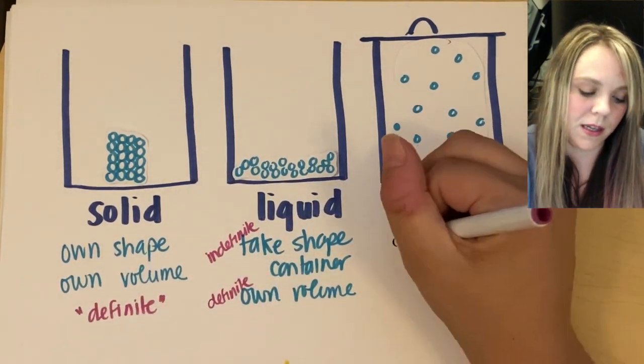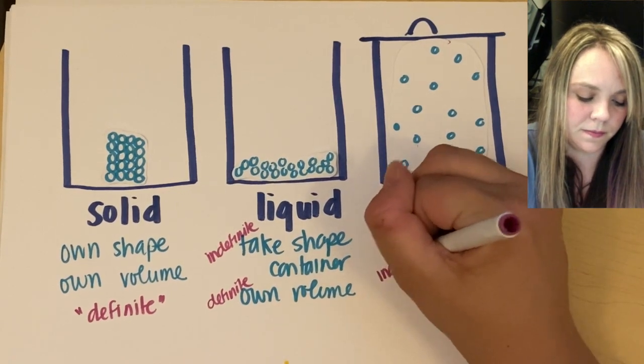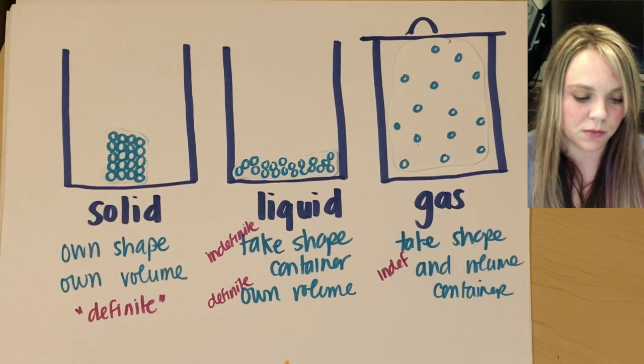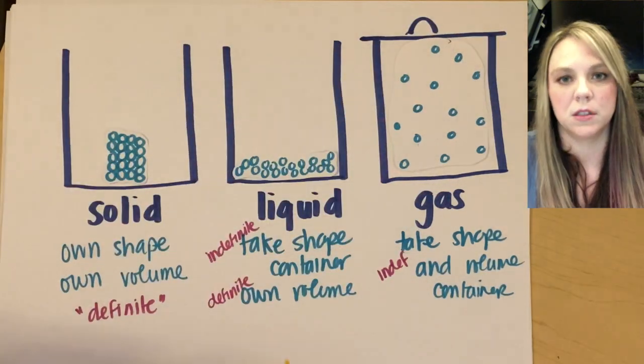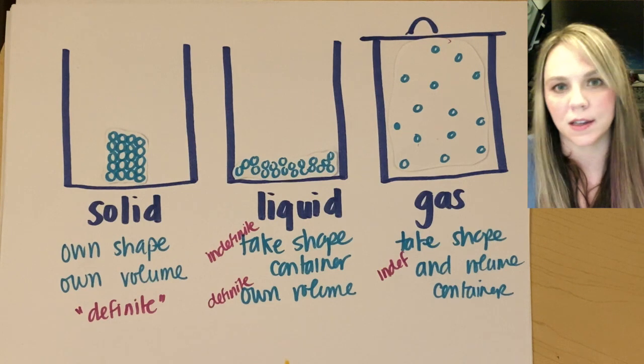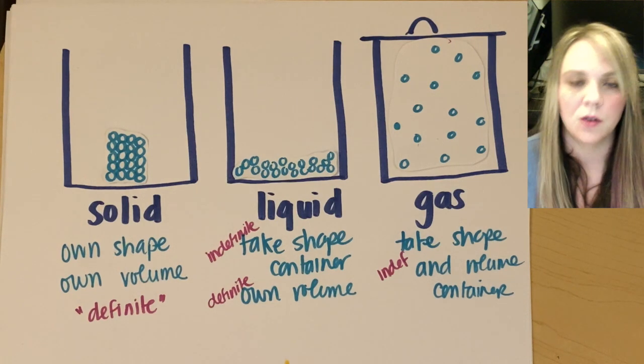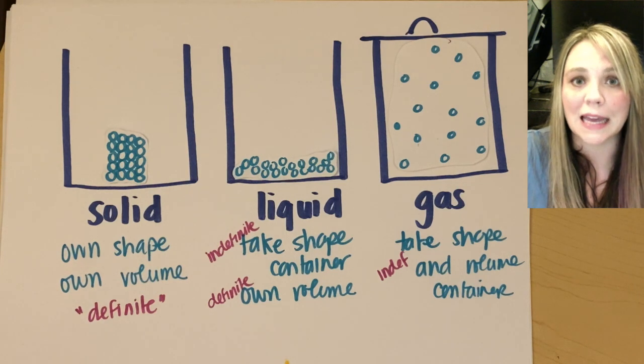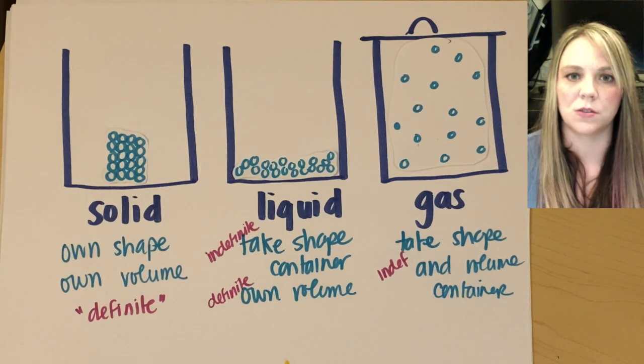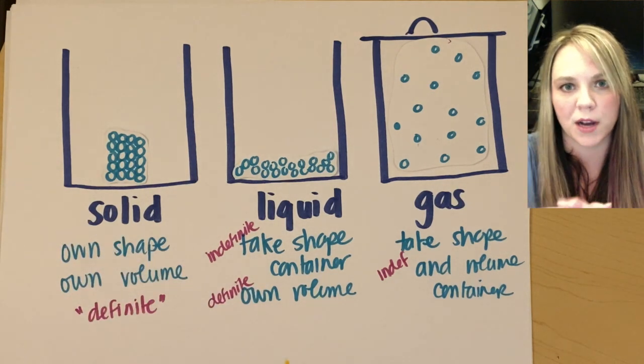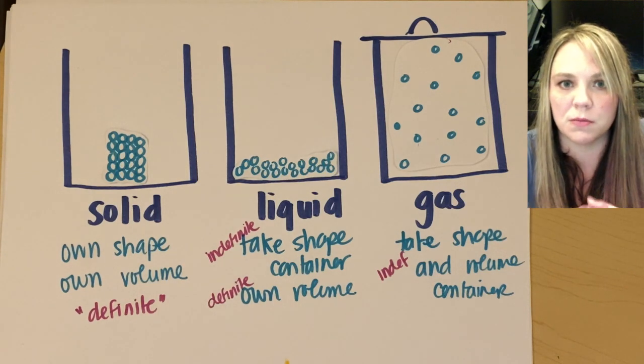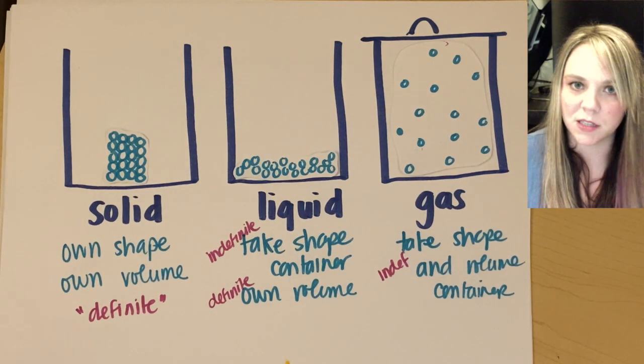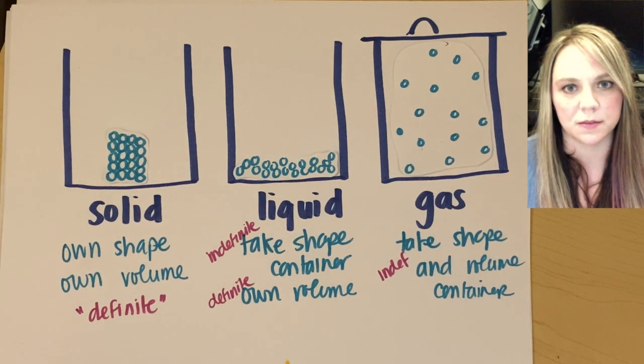So both of these would be indefinite, right? It has an indefinite shape and indefinite volume. So you can imagine if you had a gas, you can compress that gas. So that's like, if anyone's ever used hairspray or aerosol or any, you know, anything with basically any kind of aerosol, right? That's a compressed gas. So you can force a gas to be more compressed. You can change its volume, right? So gases take the shape of their container and they take the volume of their container. All right.